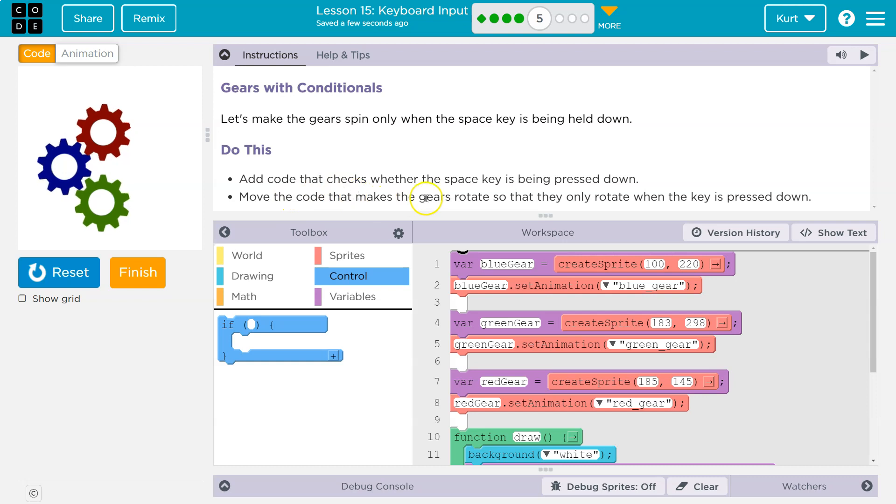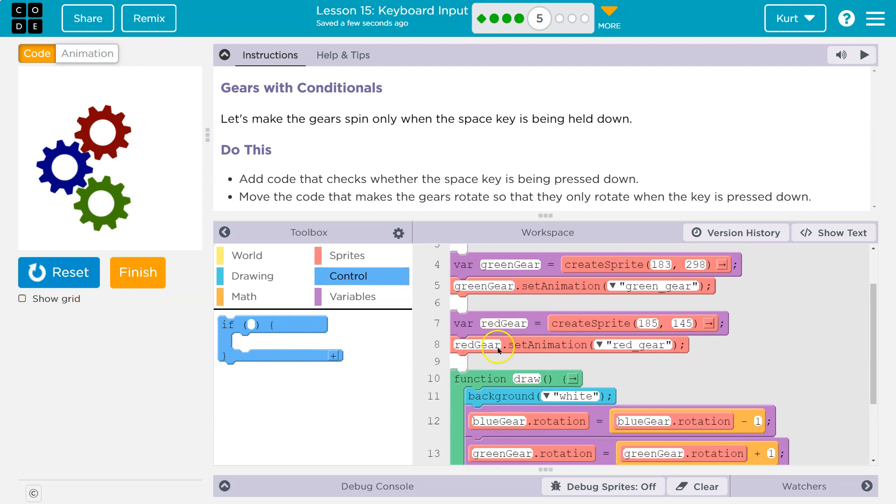Move the code that makes the gears rotate so that they only rotate when the key is pressed. All right, so how can we check if something? Well, an if statement.